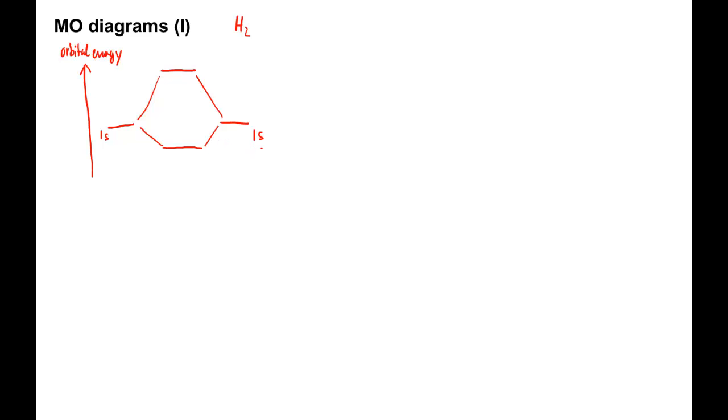Just like atomic orbitals have labels like 1s, MOs are labeled as well. The lower MO is denoted as 1 sigma g, and the upper MO is denoted as 1 sigma u. These labels consist of three parts.